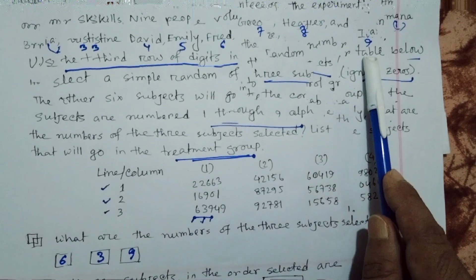The other six numbers will go to the control group. Here are the nine subjects, and the other six will be the control group. The subjects are numbered one through nine alphabetically.